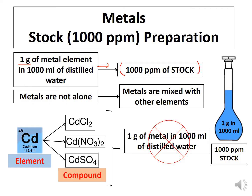But the problem is metals are not found alone. In the case of cadmium, it never occurs in nature in its elemental form. It is always found in a compound form with other elements — for example, cadmium chloride, cadmium nitrate, and cadmium sulphate.